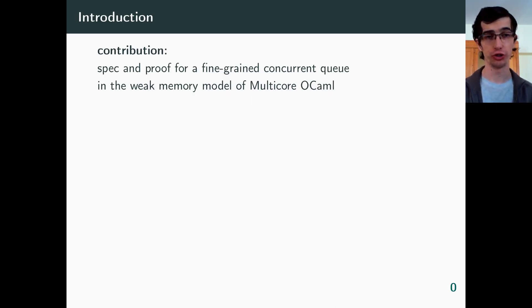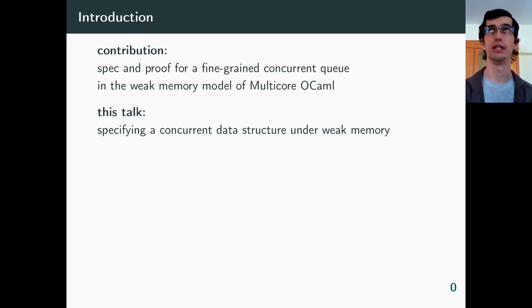Our paper's contribution is a specification and proof of a particular fine-grained implementation of a concurrent queue in a weak memory model, which is that of Multicore OCaml. In this talk, we won't cover the proof, nor the implementation, but we'll see how to write a usable spec for it.